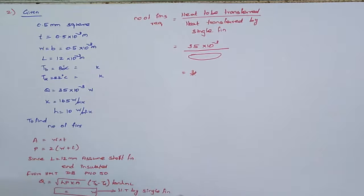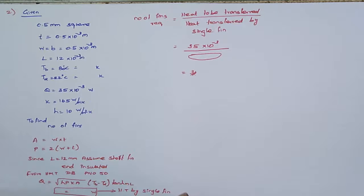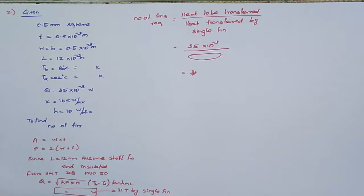So far we have discussed long fin and short fin problems, including finding the number of fins required. Now we are moving to the special case problem — the motor casing problem. The motor casing is like a cylinder with longitudinal fins along its length, as seen in labs and home pumping motors.